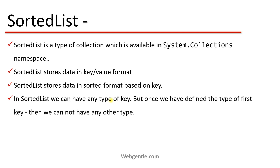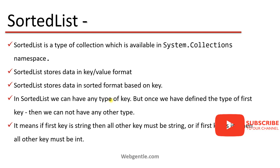In sorted list, we can have any type of key — basically the key type is object. However, there is a main constraint: once we define the type of the key, suppose the type is string, then all the elements we insert must have a key of type string. Similarly, if the first element has a key of type integer, then all elements must have an integer key.